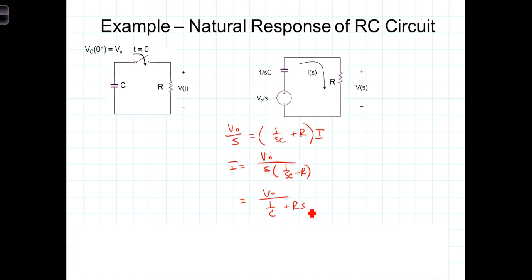Now, to get S all by itself, the highest power of S in the denominator is S to the first power. So to get this term with just a 1 in front of it, we're going to multiply numerator and denominator by 1 over R, which gives us V0 over R in the numerator divided by S plus 1 over RC in the denominator.